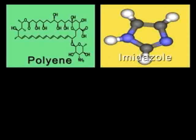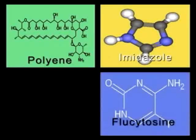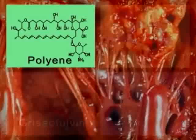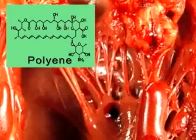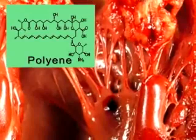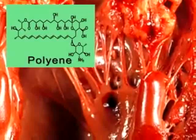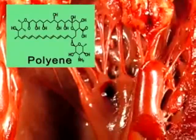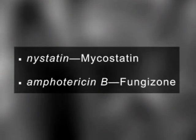polyene, imidazole, flucytosine, and griseofulvin. Polyenes alter fungal cellular metabolism by binding to sterols, leading to the death of the organism. Examples include nystatin (Mycostatin) and amphotericin B (Fungizone).